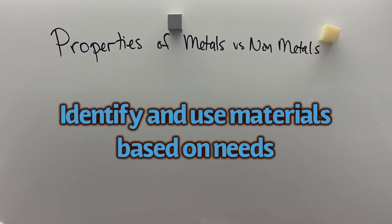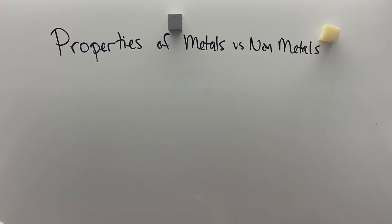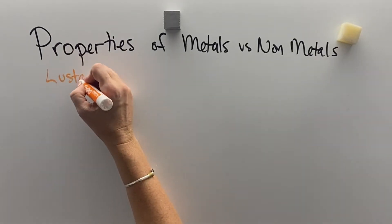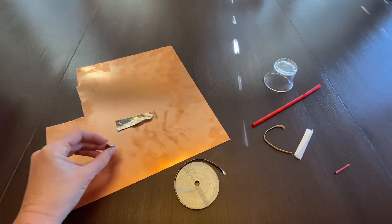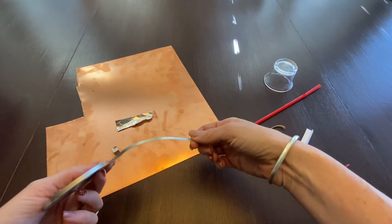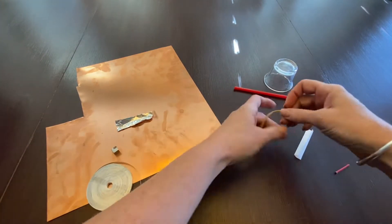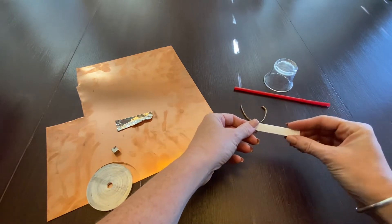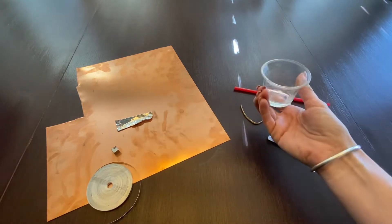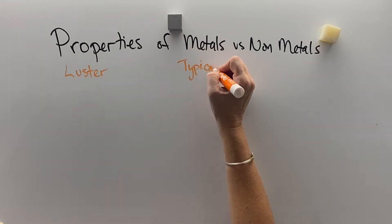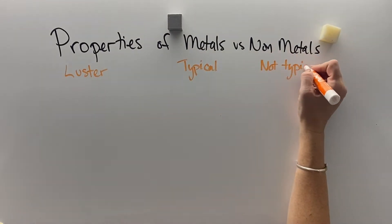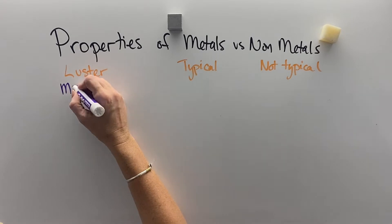The properties of metals and non-metals help us to use and identify materials for our specific needs. For example, luster. If we look at the metals on the left, they're all pretty shiny, which means that they have a very smooth surface. All these non-metals on the right are not very shiny — they're dull, except glass. Things that are lustrous are very useful because they're smooth, so they can be sanitized easily.